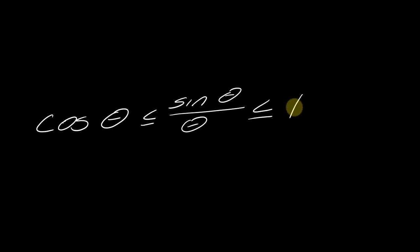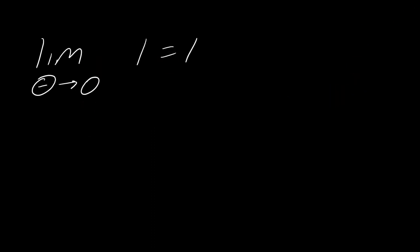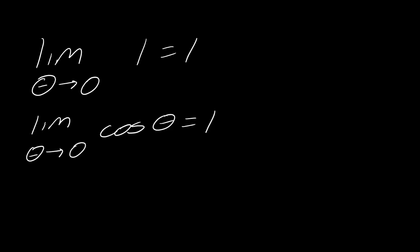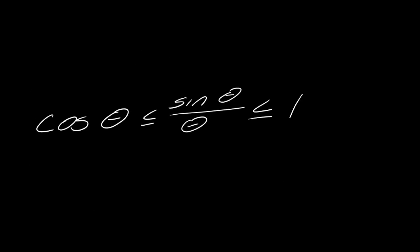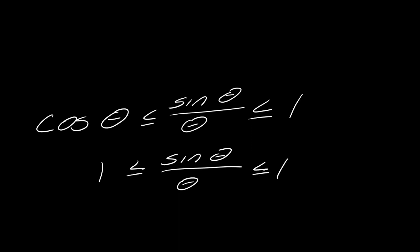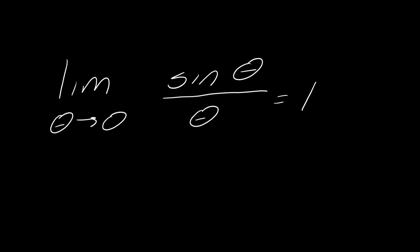Starting with the endpoints: the limit as theta approaches 0 of the constant 1 is just 1. And the limit as theta approaches 0 of cosine theta — plugging in 0 — is also 1. So both outer limits equal 1. By the squeeze theorem, since the middle expression is sandwiched between two expressions that both approach 1, we can conclude: the limit as theta approaches 0 of sine theta over theta equals 1. This is exactly what we were trying to prove.